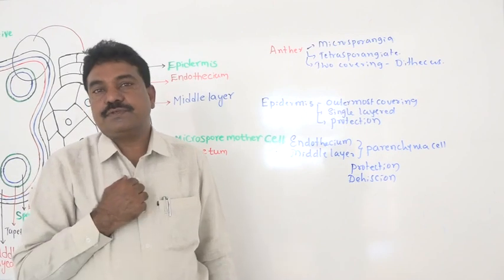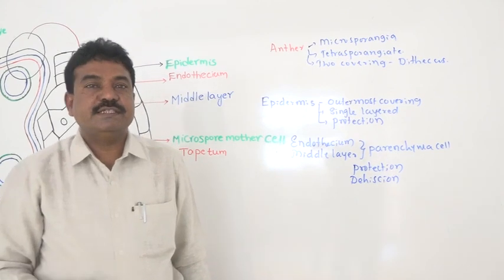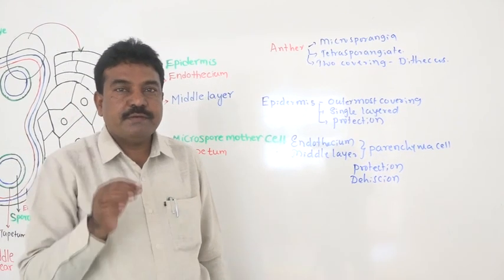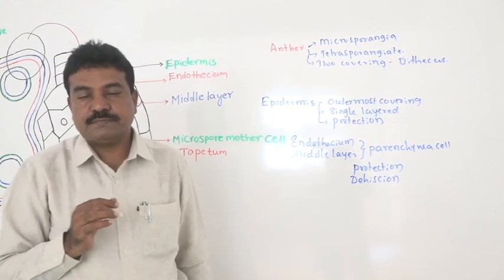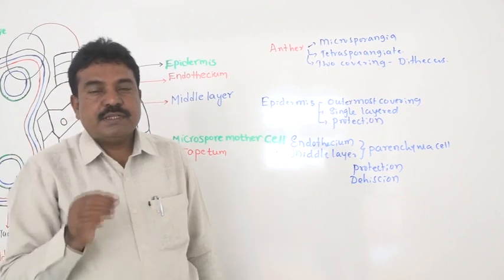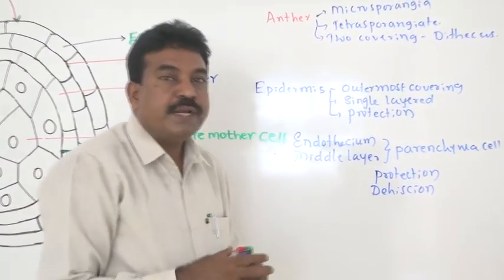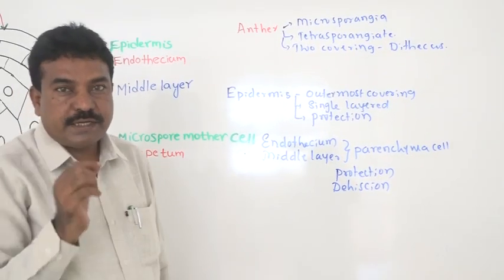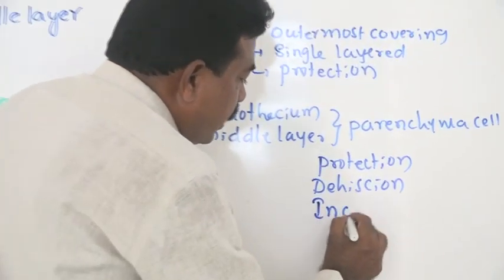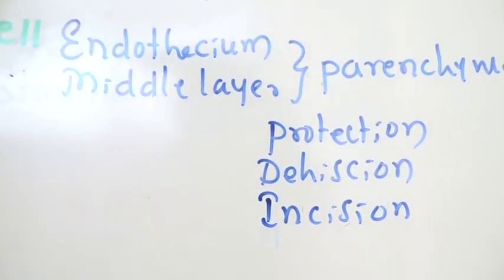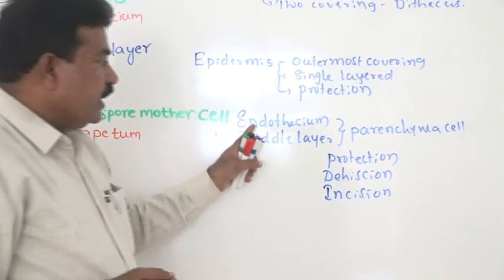As we know from first year, we classify fruits into two groups: fleshy fruits and dry fruits. In dry fruits, we classify them into dehiscent fruits and indehiscent fruits. Indehiscent fruits do not break open at all, while dehiscent dry fruits break up in a definite direction. Therefore, dehiscence means breaking in a definite direction. Incision means cutting in a definite direction.